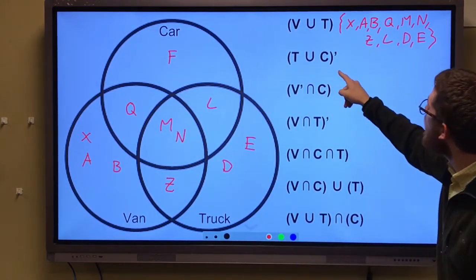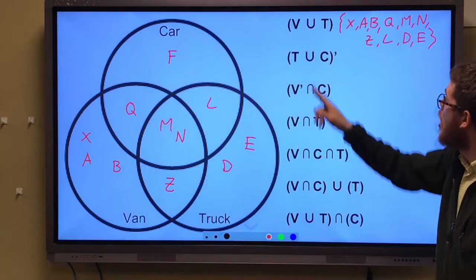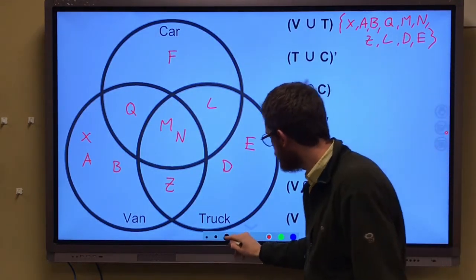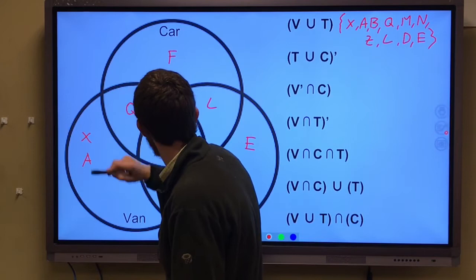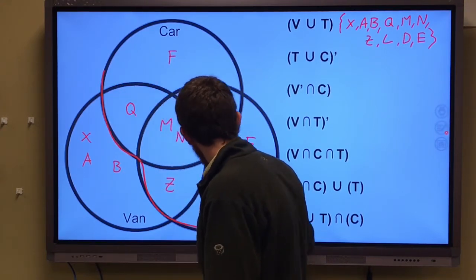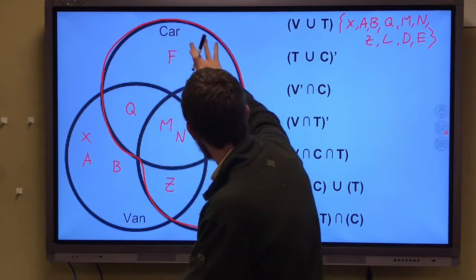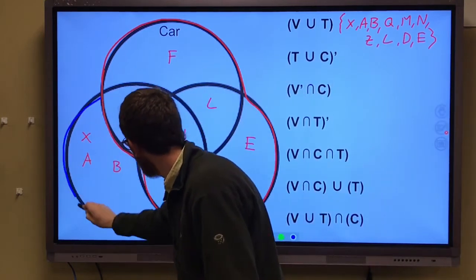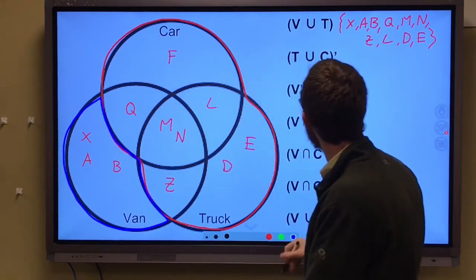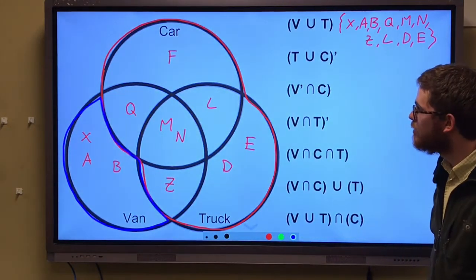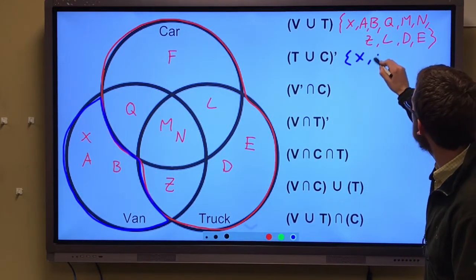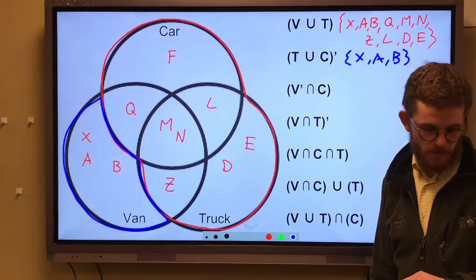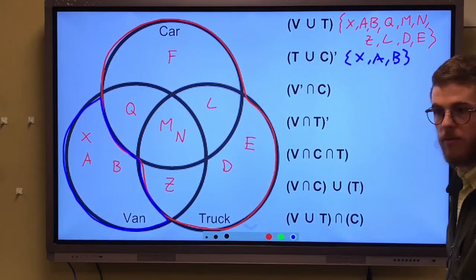Next we have the complement of T union with C. This is everything but T union with C. So if we trace out T union with C, that is just X, A, and B. Xavier, Abby, and Beth.